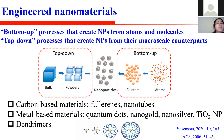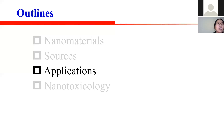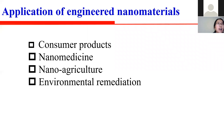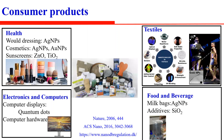Engineered nanomaterials are applied in various fields such as consumer products, nanomedicine, nanoagriculture, and environmental remediation. In human health, silver nanoparticles are used as wound dressings due to their antibacterial properties. Silver nanoparticles and gold nanoparticles are included in cosmetics to provide up to 24-hour antibacterial protection. Zinc oxide and titanium dioxide are used in sunscreens to defend against solar irradiation.